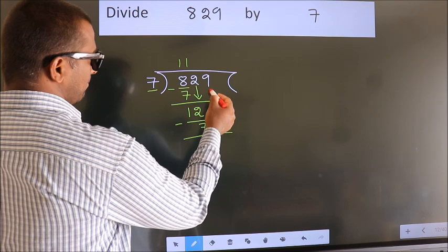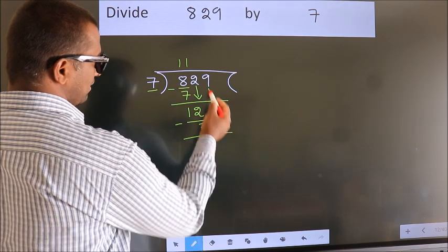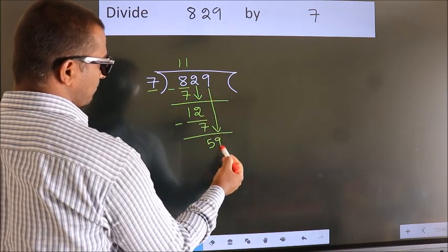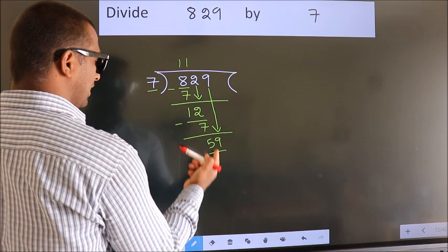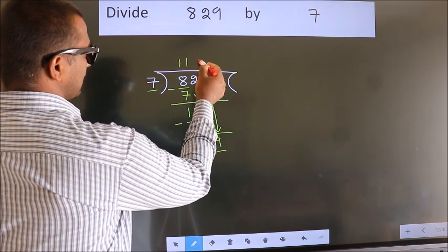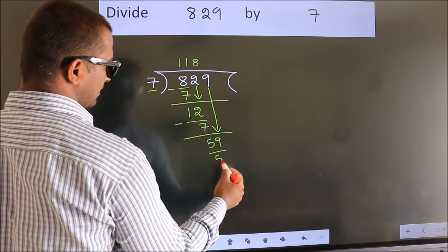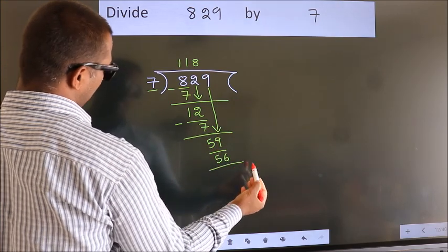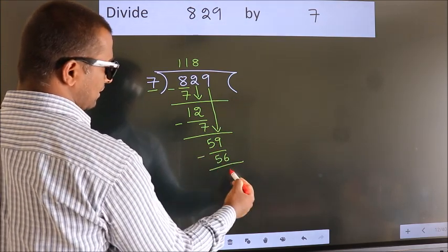After this, bring down the next number. So 9 down, giving us 59. A number close to 59 in the 7 table is 7 times 8, which is 56. Now we subtract. We get 3.